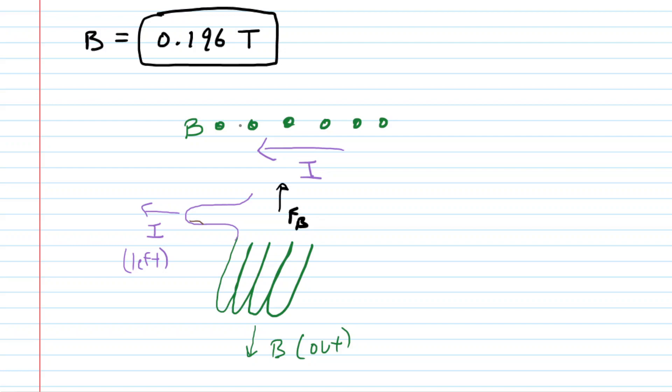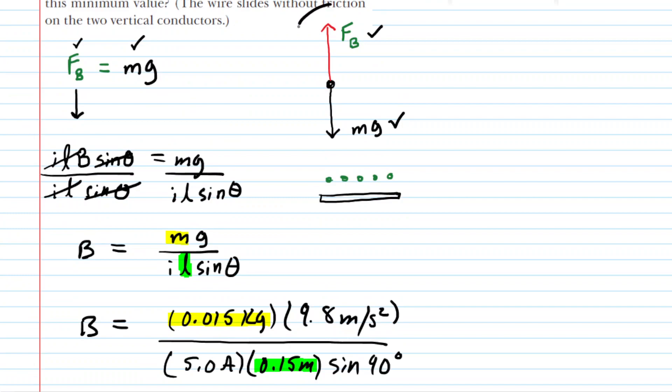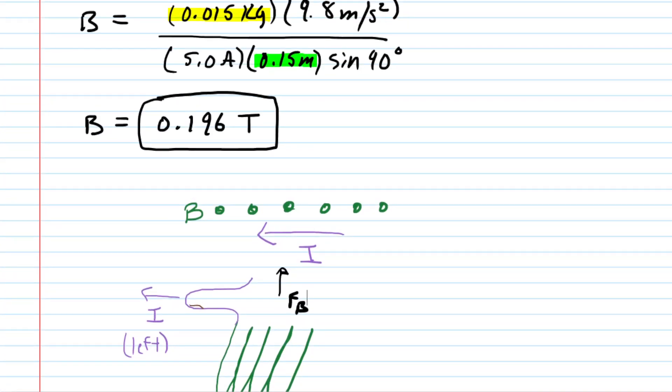So indeed with our assumption that the magnetic field was going out of the page, that would yield a magnetic force pointing upward. Remember we wanted the magnetic force pointing upward in order to balance out the gravitational force. So indeed we have the magnitude of 0.196 tesla and then the direction would be the magnetic field is directed out of the page.